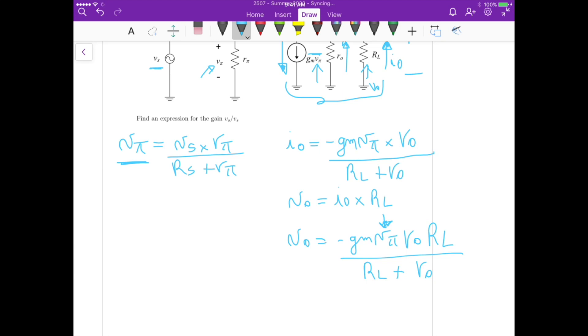Vout equals minus Vs Rpi R0 RL GM divided by Rs plus Rpi times RL plus R0.